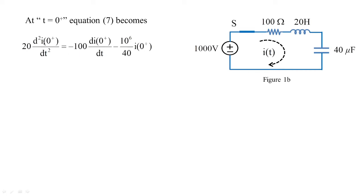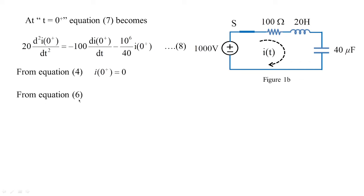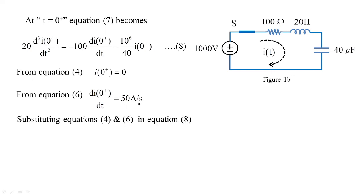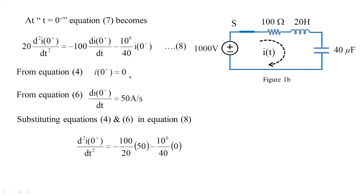Substituting t equal to zero plus into equation 7, and using i(0+) = 0 from equation 4 and di/dt(0+) = 50 A/s from equation 6, we get: d²i/dt²(0+) = (−100/20) × 50 + 0, which equals minus 250 amperes per second squared. This completes the series RLC initial conditions problem.